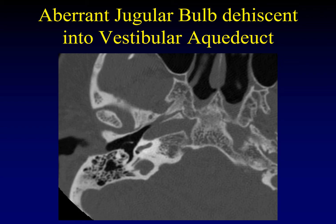Another way to get pulsatile tinnitus is to have an aberrant jugular bulb that is dehiscent into the vestibular aqueduct. This line represents the vestibular aqueduct, and you can see there is no bony plate between the vestibular aqueduct and the high-riding jugular bulb — a potential source of pulsatile tinnitus.